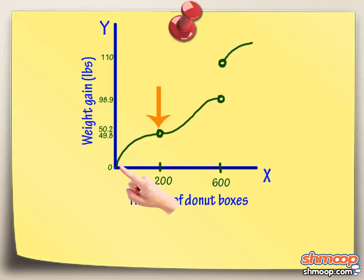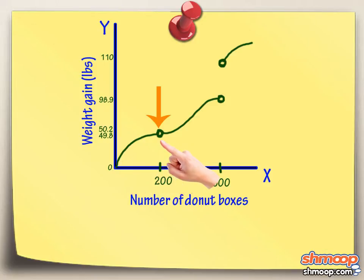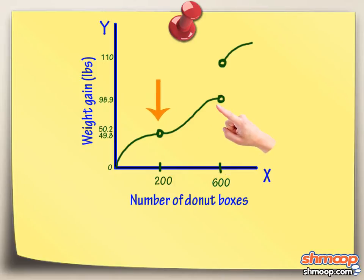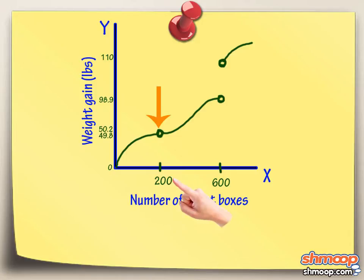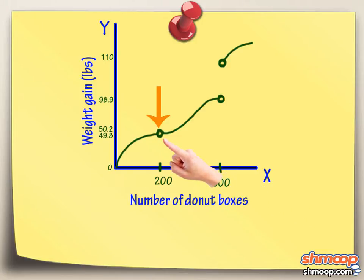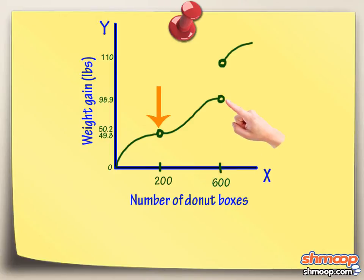Note that we did this even though the graph is discontinuous and technically didn't have a value at that point — we just guessed. We can try to find the limit of a function at any X value, but here Big Randy only cares about the limit of the graph at X equals 200 and 600 boxes.